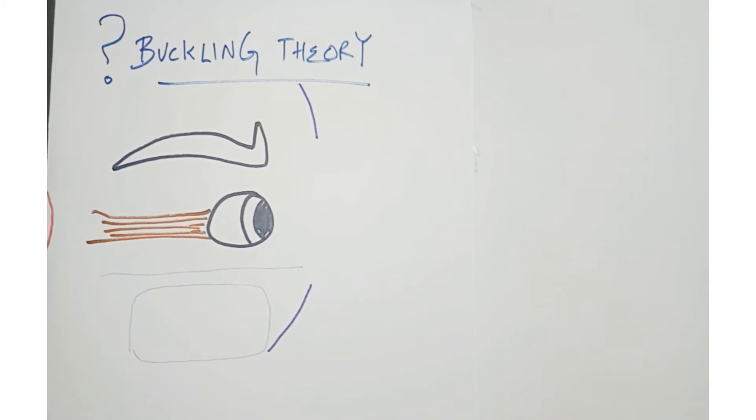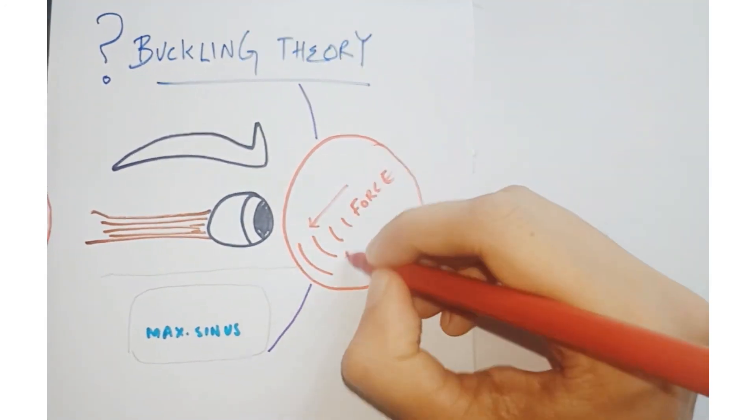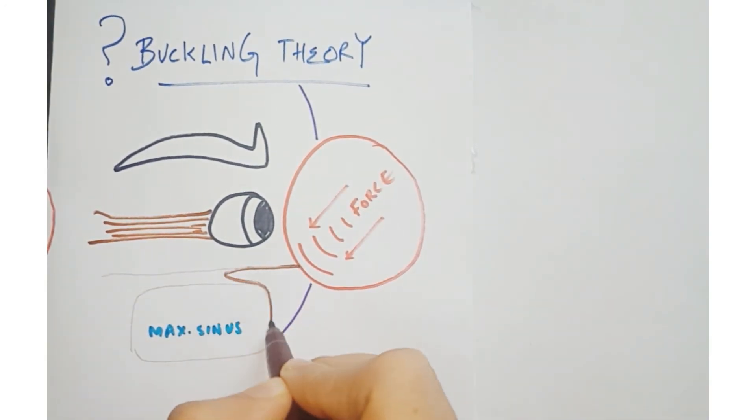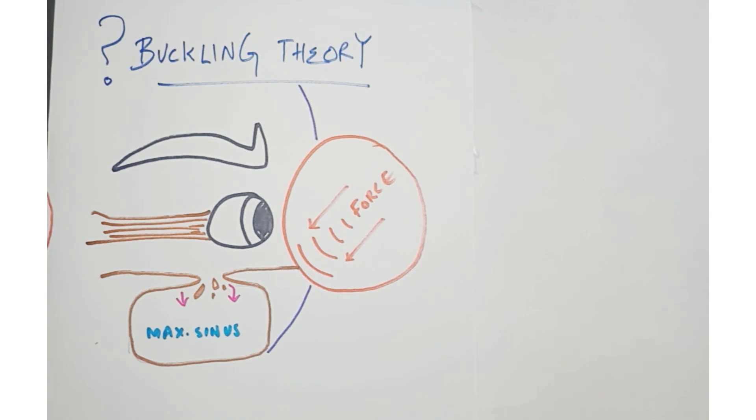This happens when there is blunt trauma to the face. Due to this, the bony orbit is compressed anteroposteriorly, and this causes the fracture in the floor of the orbit, which leads to herniation and incarceration of muscles and fractured fragments.